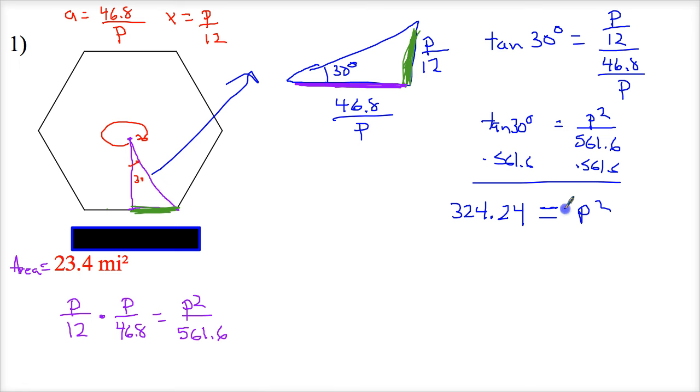Now, I need to take the square root to get P by itself because the opposite of squaring is square root. So P is equal to, technically, it's plus or minus 18.006, so we'll just say 18.0 plus or minus.